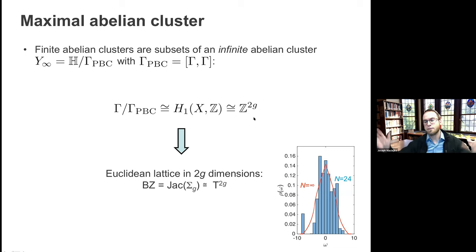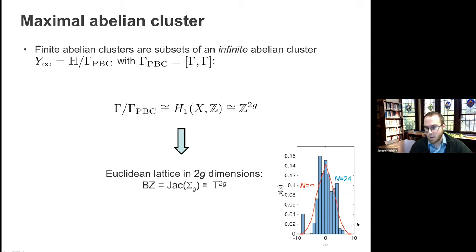For abelian clusters, the Bloch ansatz is exact. We can verify this explicitly: diagonalizing the hopping Hamiltonian on the cluster by brute force (red crosses) and computing results using the Bloch ansatz, we find perfect agreement. What we get is a four-dimensional tight-binding band structure evaluated at a discrete set of k-points, increasingly finely discretized as we go to larger systems. These abelian clusters are all subsets of an infinite abelian cluster — an infinite cover of the genus-two surface — whose factor group is the first homology group of the Riemann surface, which is abelian. For this infinite abelian cluster we recover the fully continuous four-dimensional Brillouin zone.